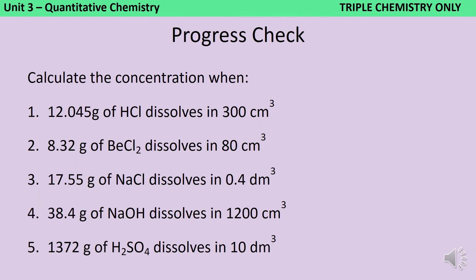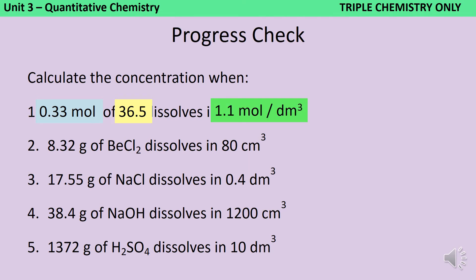Here are five more questions of the same type. If you're feeling confident, you can pause the video now, but I'll go through the first one just in case. We start by working out the relative formula mass of hydrogen chloride, which we've already done: 36.5. Then we use that together with the mass given in the question to work out the moles: 12.045 divided by 36.5 gives 0.33 moles. Then we divide by the volume — 300 centimetres cubed is 0.3 decimetres cubed, dividing by 1000 — giving a concentration of 1.1 moles per decimetre cubed.